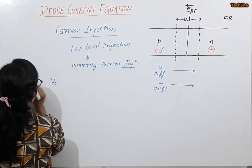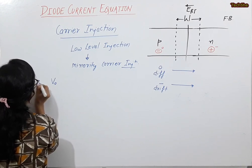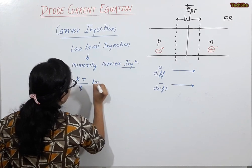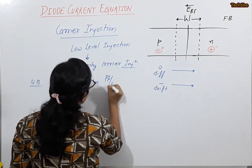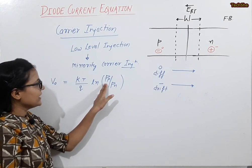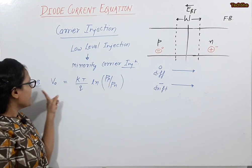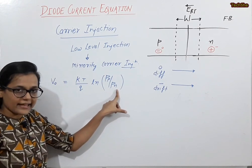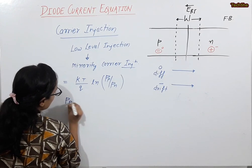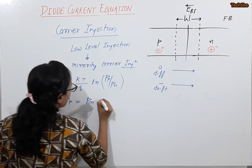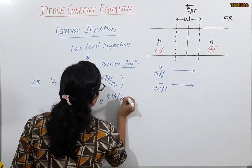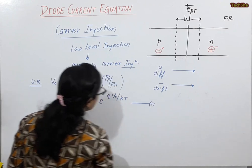In the unbiased condition, the contact potential formula is: V₀ = (KT/q) × ln(PP/PN), where PP is the hole concentration in the P-region and PN is the hole concentration in the N-region when unbiased. This equation equals PN × exp(qV₀/KT). We will call this equation 1.